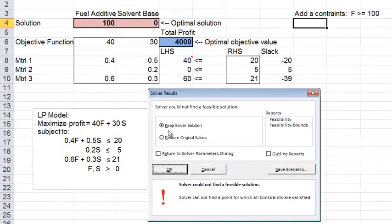So we could see it says solver could not find the feasible solution. Now remember the feasible solution means a solution that satisfies all the constraints at the same time. Because we had an additional constraint, F is greater than or equal to 100, which conflicted with the other constraints from the materials, there were no solution values for F and S that were able to satisfy all the constraints, including the new one.